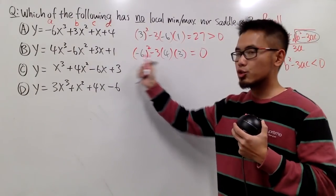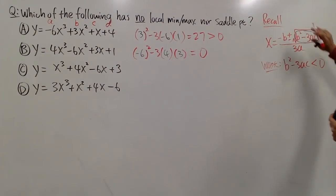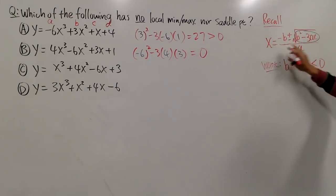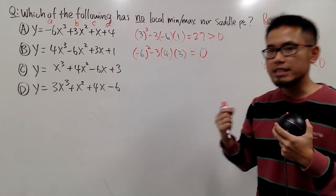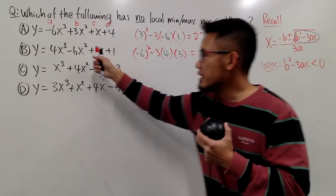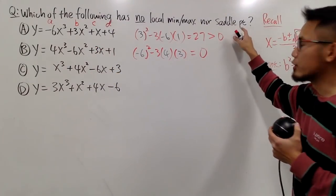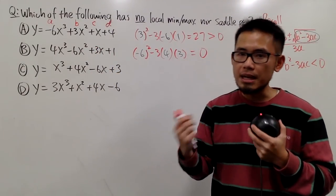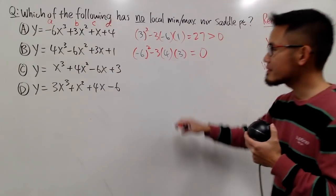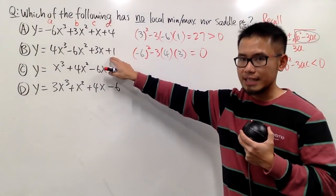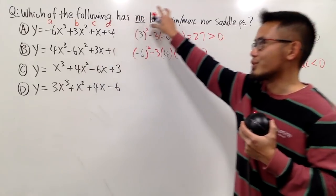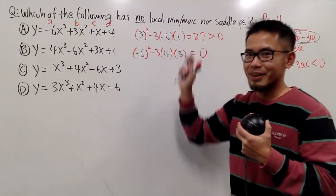When we have the discriminant equal to 0, that means this part is 0 and we only have one value, one x value. That means this curve actually has a saddle point because that point is not minimum, it's not maximum. This has a saddle point but this is not the answer. I'm looking for nothing.